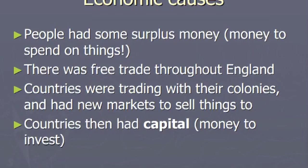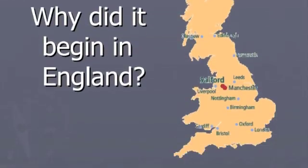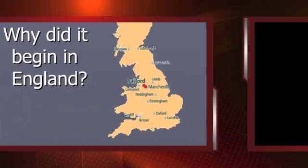They also had capital, which meant money that you can invest — like buying a new machine to make even more money. That's what we're going to leave off for now. Next class, we're going to learn about why the Industrial Revolution began in England, and we'll have some more facts for you.